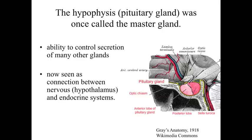The pituitary gland, or the Latin name hypophysis, was once called the master gland. The reason for that is that the pituitary gland has the ability to control many of the other hormone-secreting cells and hormone-secreting glands within the body. Now we have a better understanding for how the pituitary works and how it essentially responds to a variety of stimuli within the body.